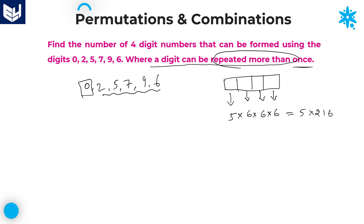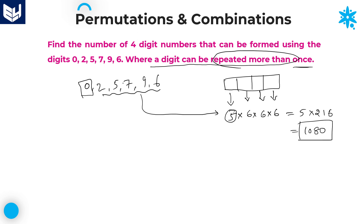Multiplying all possibilities: 5 × 6 × 6 × 6 = 5 × 6³ = 5 × 216 = 1080. That is the required answer. Many students mistakenly write 6 ways for the first position, but you should not do that because no number can start with 0. Except for 0, the first place can take any of the remaining 5 digits, and from the second place onwards all 6 digits are available because repetition is allowed. Therefore the answer is 5 × 6³ = 1080.